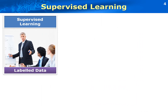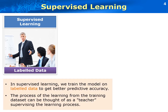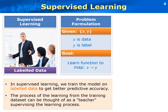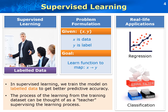First, let's take a look at supervised learning. Supervised learning is one of the most important learning methods in neural computing. In supervised learning, we train the neural network model on labeled data. The problem of supervised learning can be formulated as follows. Given x and y, where x is data and y is the label, our goal is to learn a mapping function from x to y, so that we can use this mapping function to predict the new output for new input data with better accuracy. The process of learning the mapping function from training data can be thought of as a teacher supervising the learning process. There are two important applications for supervised learning: regression and classification.